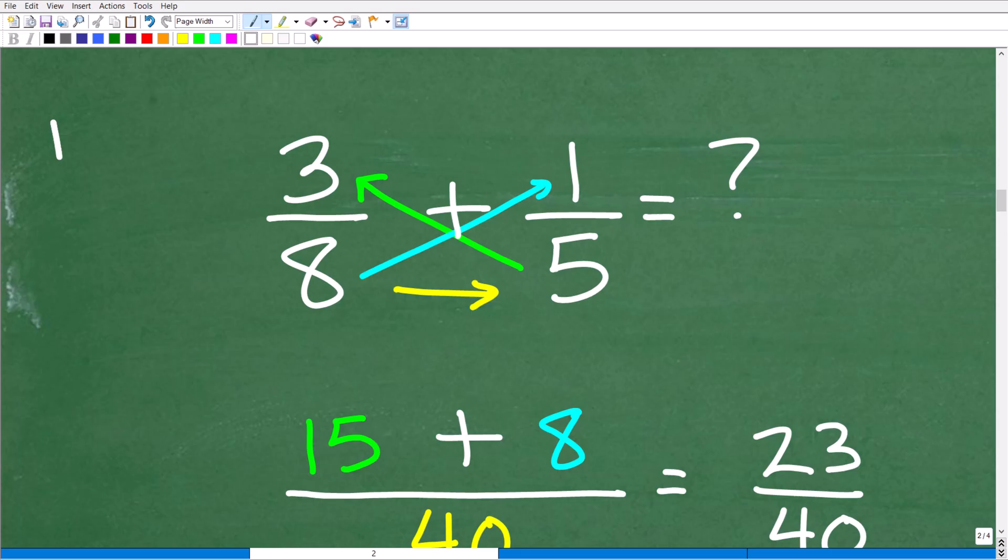This method I like to coin the phrase the bow tie method. A bow tie is a tie that looks like this, nice little bow tie. The reason why I'm calling it the bow tie method is because I want you to remember this pattern. Here is how this bow tie method works. You're going to go in this exact pattern in this exact order. If you can remember this, then you can add and subtract any two fractions that have one numerator and denominator.